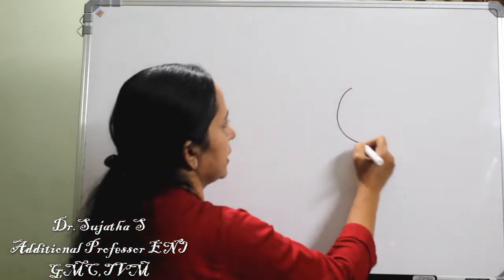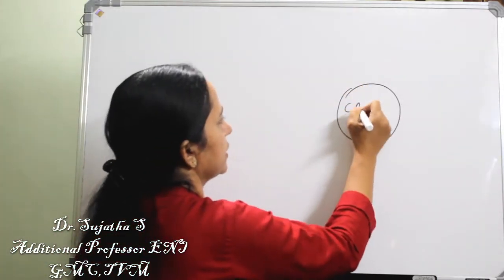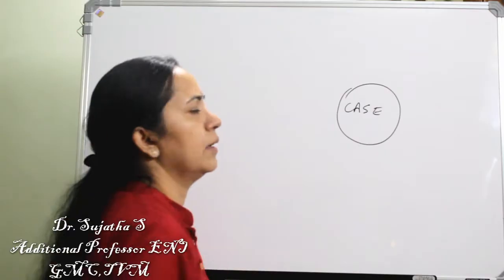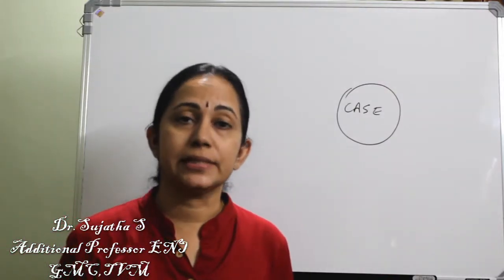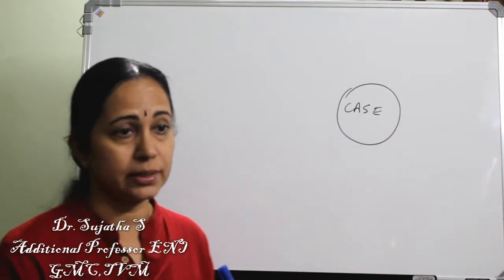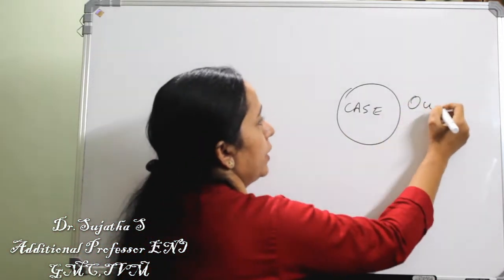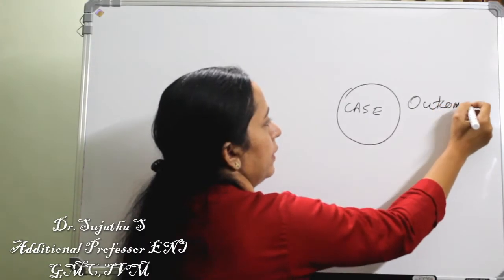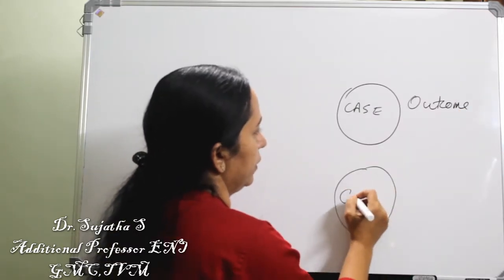So there is a case. What is a case? Any individual who is suffering from a disease is called a case. So that is the outcome — outcome has already occurred. And there is also a control.